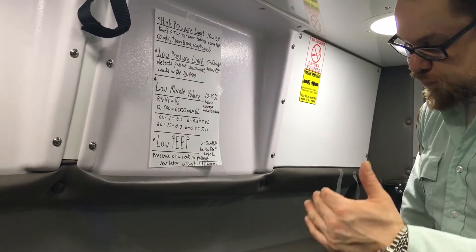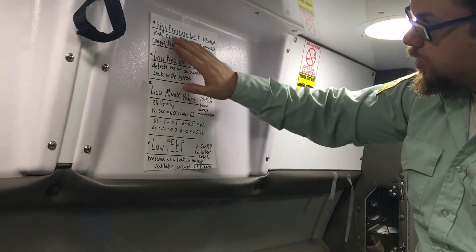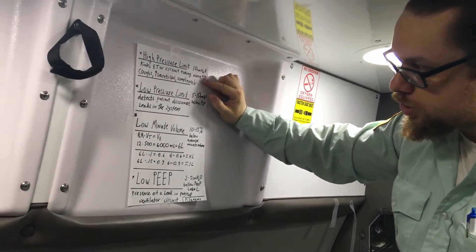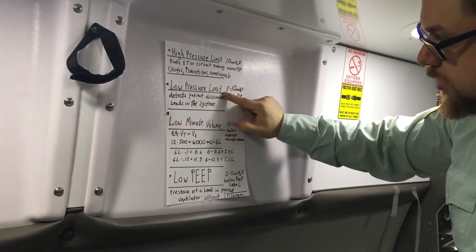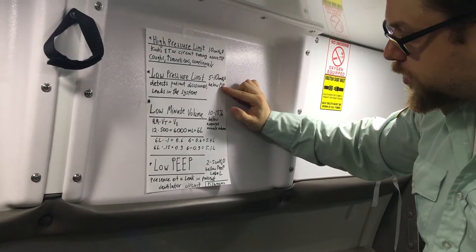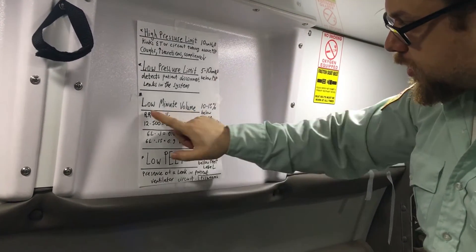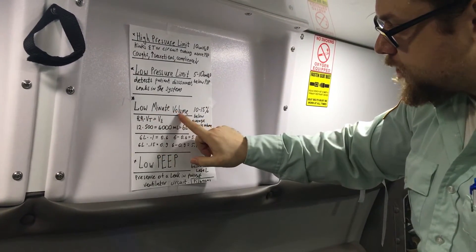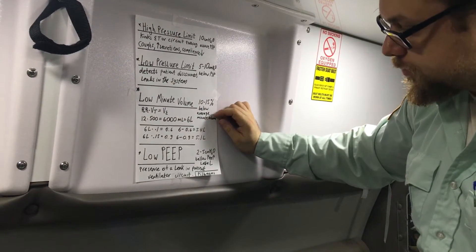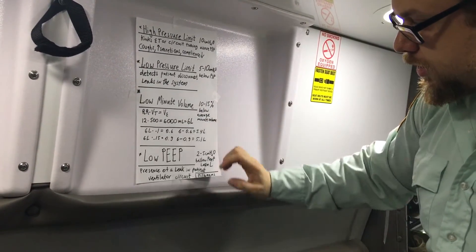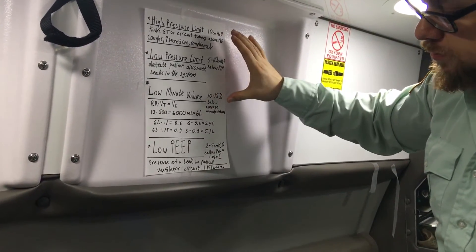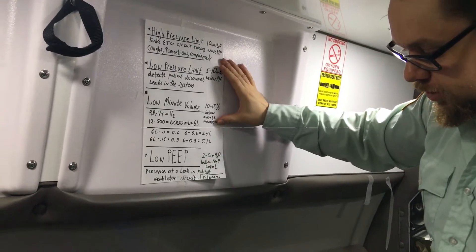So just to review all of them: high pressure limit is 10 above peak inspiratory pressure. Low pressure limit is 5 to 10 below peak inspiratory pressure. Low minute volume is 10 to 15% below your minute volume. These are the limits that we're actually inputting.